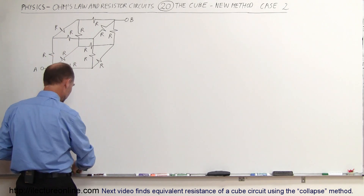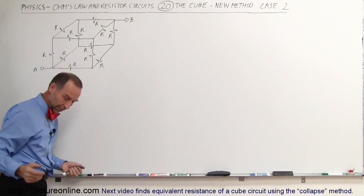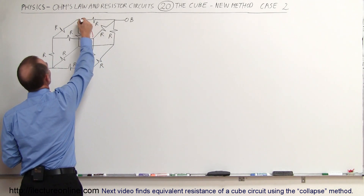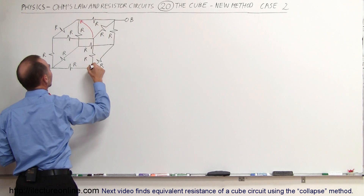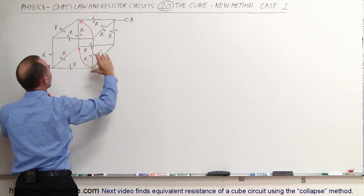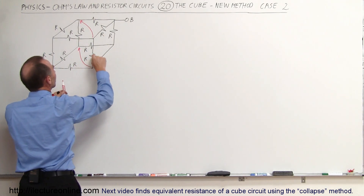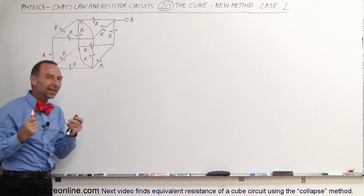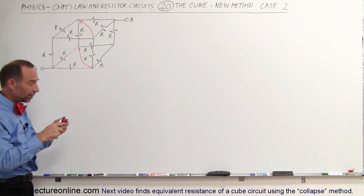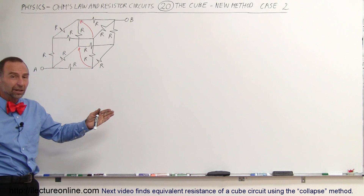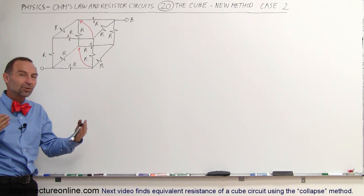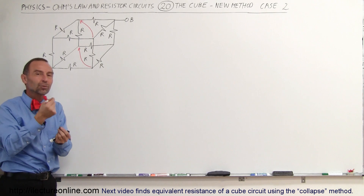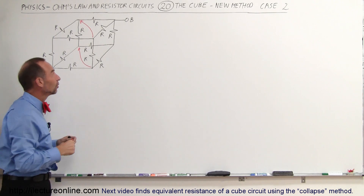What that means is we can take this corner and collapse it onto this corner, and take this corner and collapse it onto this corner, making this into a flat circuit so that opposite resistors combine. You can think of them as two resistors in parallel, and when you take two resistors in parallel with the same resistance and combine them, you get the equivalent resistance of half the resistance.